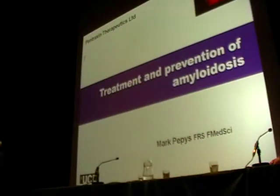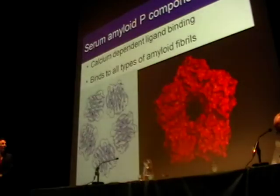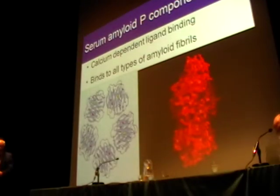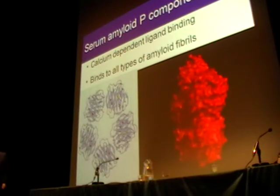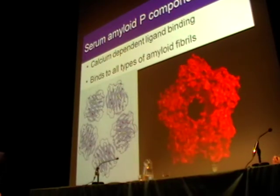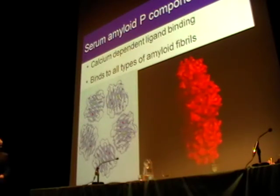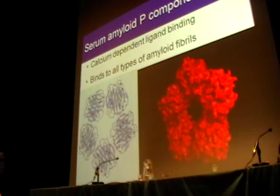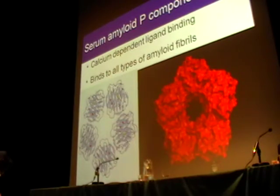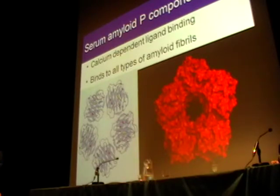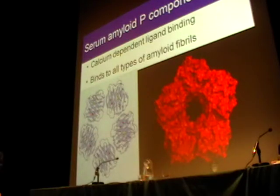We are developing therapeutic and prophylactic approaches for amyloidosis. The first target I'm going to talk about is serum amyloid P component, a normal plasma protein present in everybody. No one has ever been found who doesn't have it, and there's no polymorphism of either its protein or glycan components. It consists of five identical non-covalently associated subunits — shown here in the crystal structure — each with a binding site that, together with two calcium atoms, binds it to amyloid fibres of all types.